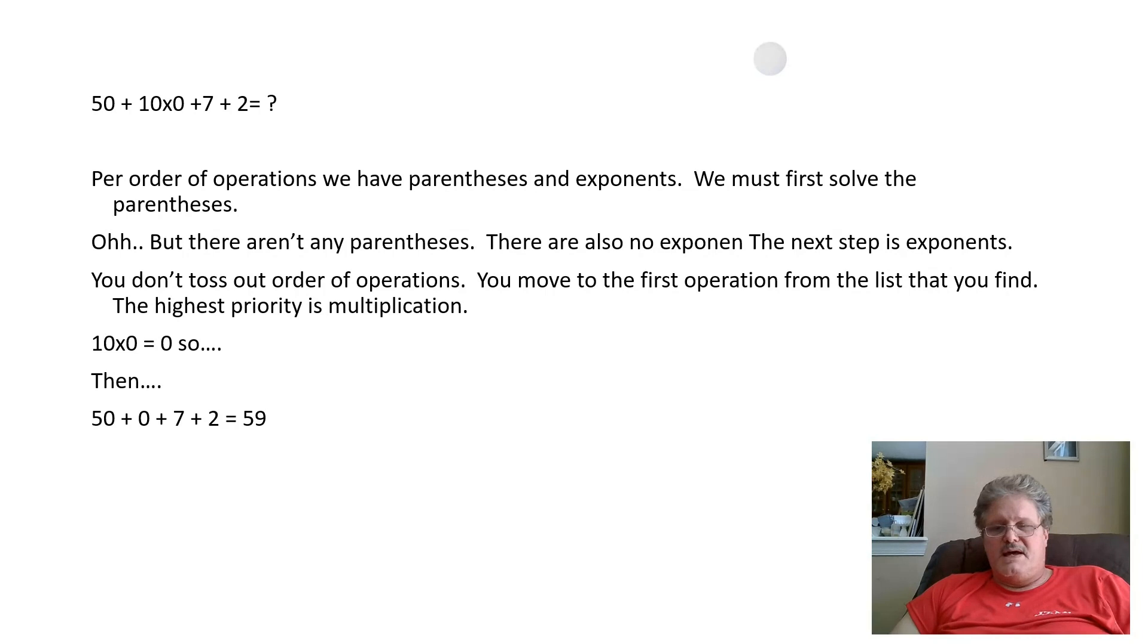Multiplying by zero is saying how many groups of something do you have. If I have 10 pencils and zero bags, how many bags of pencils do I have? I've got zero. I don't have any bags of pencils. I think a lot of people are confusing addition and multiplication. 10 plus zero is 10. 10 times zero is zero.